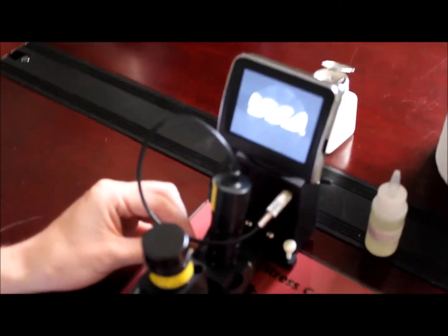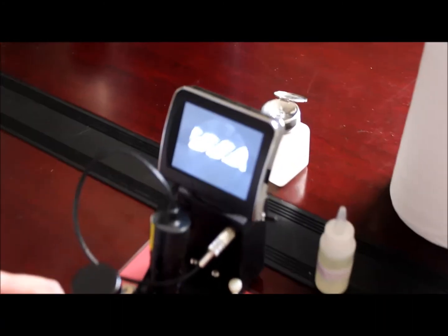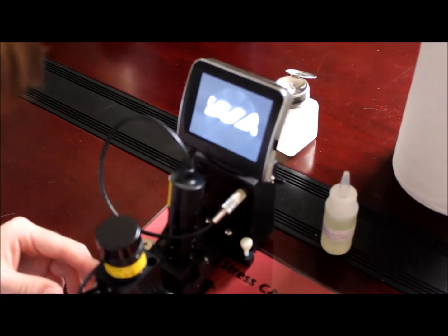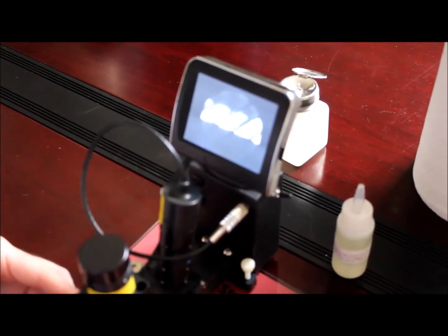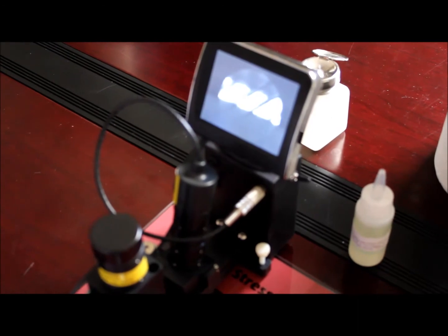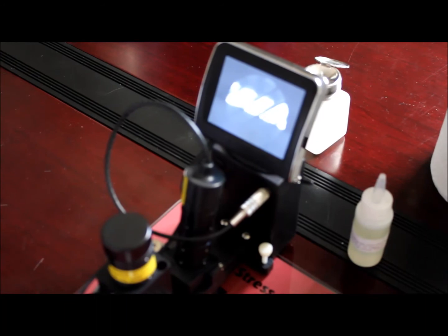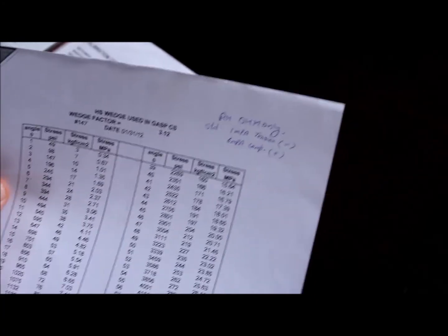Okay, and the measurement on here is approximately 40 degrees. And this is a 3.1 wedge constant, which if you look at our calibration documents, 40 degrees comes up as 2351 PSI. And on here we have written our 2350 PSI.